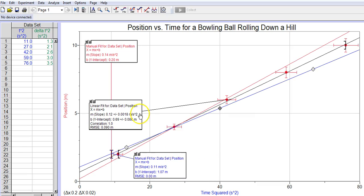So it's minimum slope, best fit slope, linear fit, and then manual fit or the max.